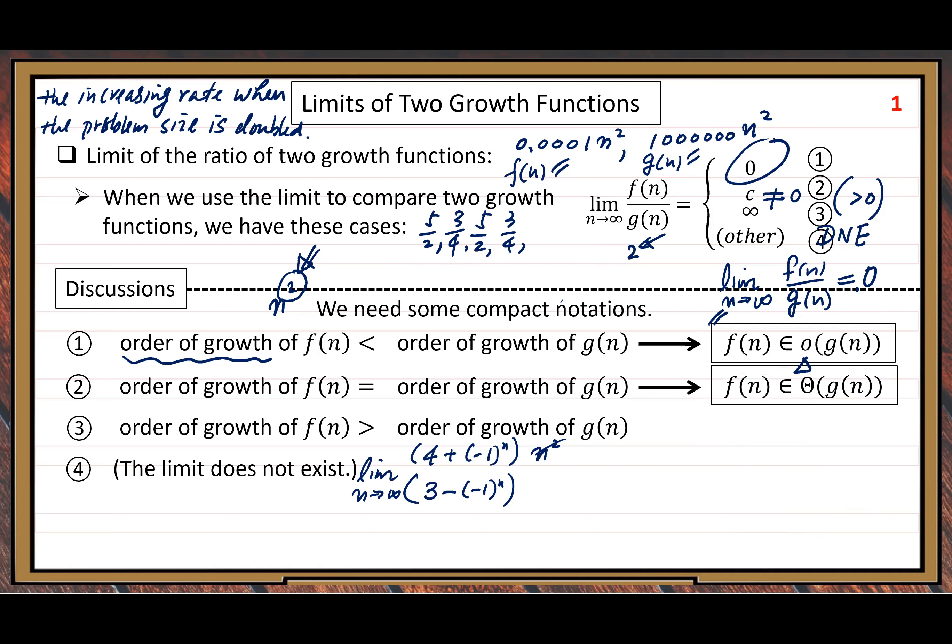The second case uses another symbol: big theta — f(n) ∈ Θ(g(n)). We use big theta to represent that f and g have the same order of growth. The third case, where the limit equals infinity, we use little omega: f(n) ∈ ω(g(n)). These three symbols correspond to three different asymptotic notations.